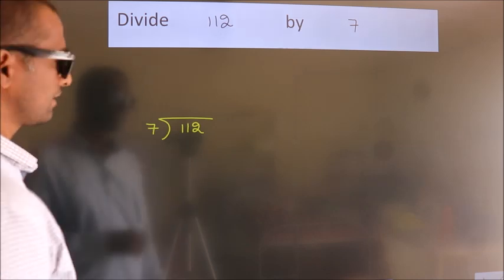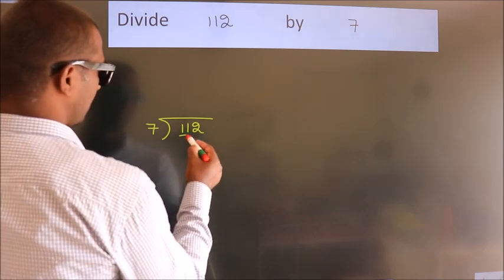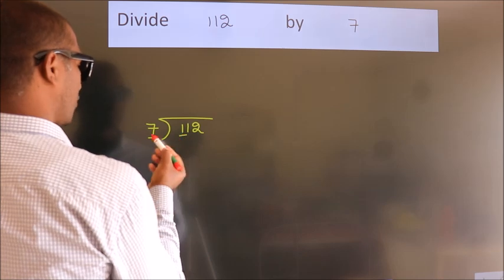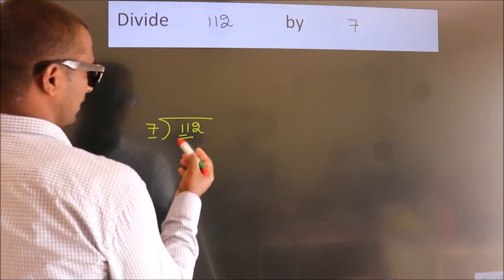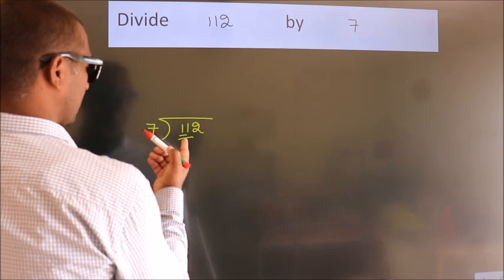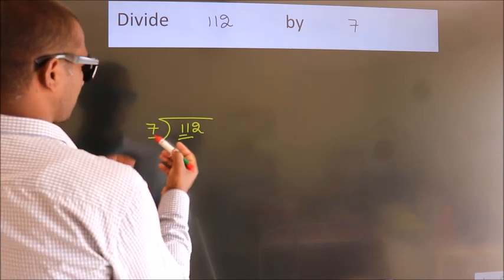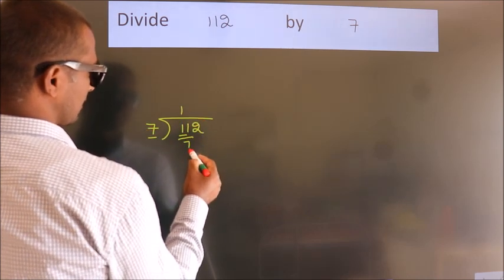Next, here we have 1, here 7. 1 is smaller than 7, so we should take 2 numbers: 11. A number close to 11 in the 7 table is 7 once 7.